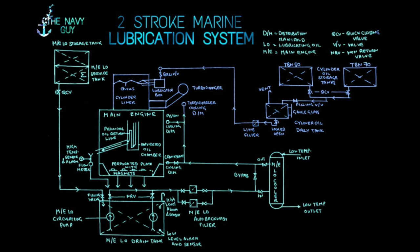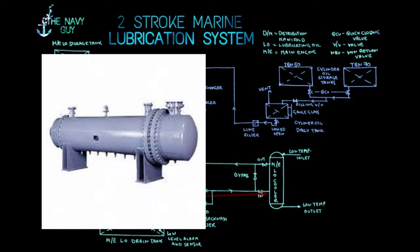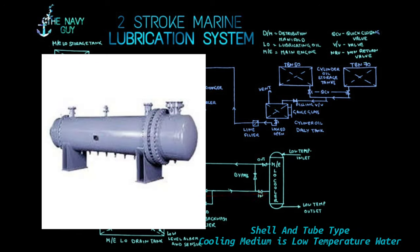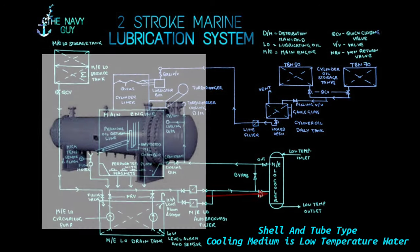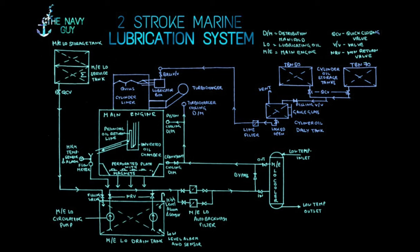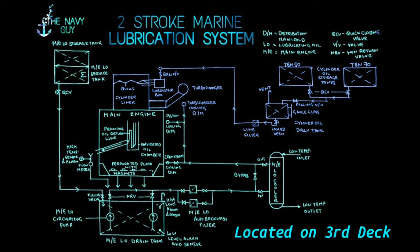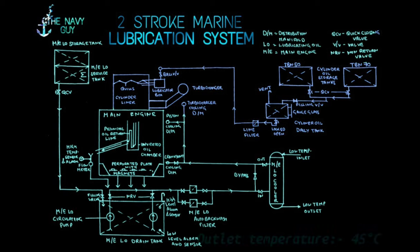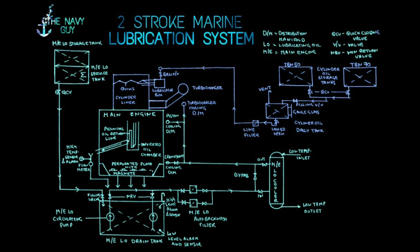From there, lube oil enters the main engine lube oil cooler. It is a shell and tube type heat exchanger; the cooling medium is low temperature water from the central cooling system. It is located on the engine room third deck. The normal outlet temperature is 45 degrees Celsius. It is provided with a bypass valve for isolating the cooler in case of maintenance, ensuring lube oil supply does not stop.